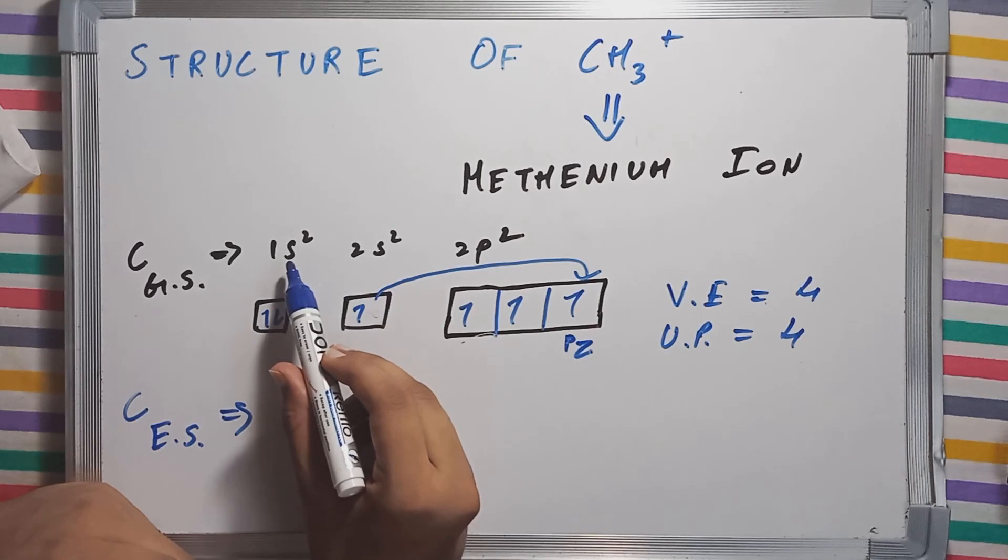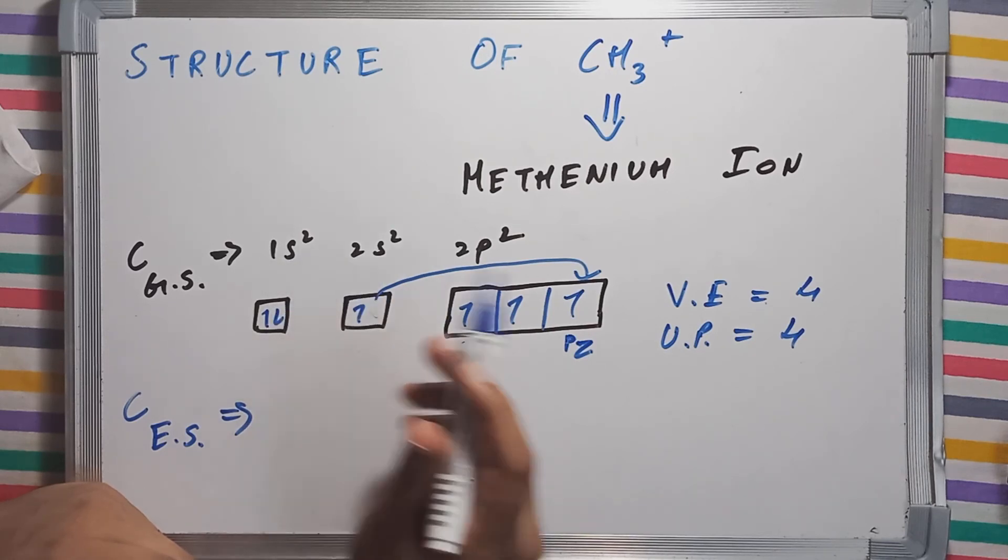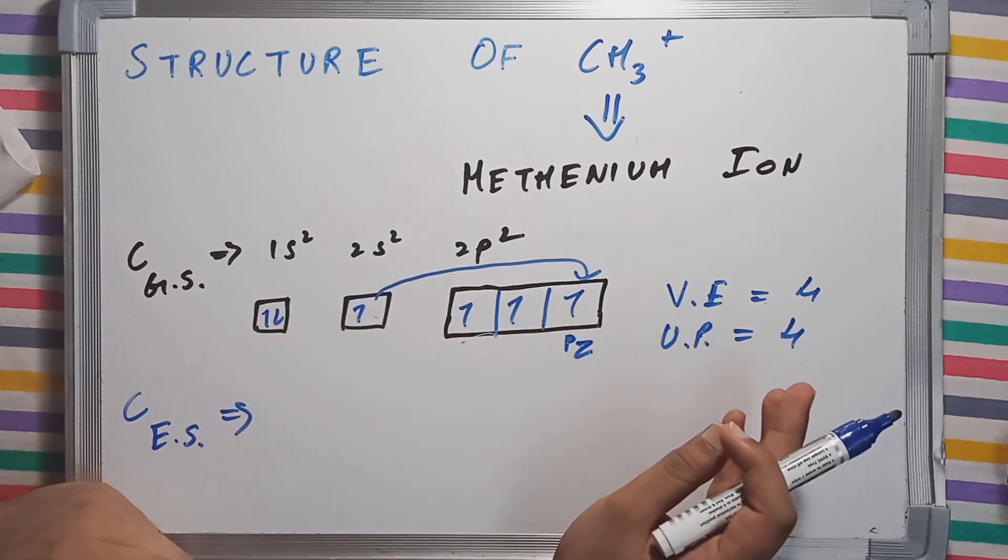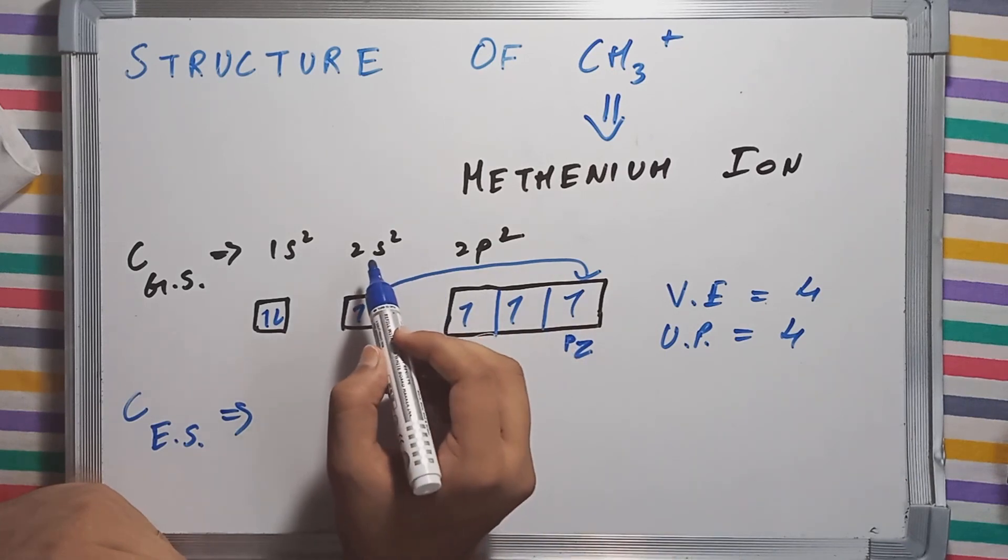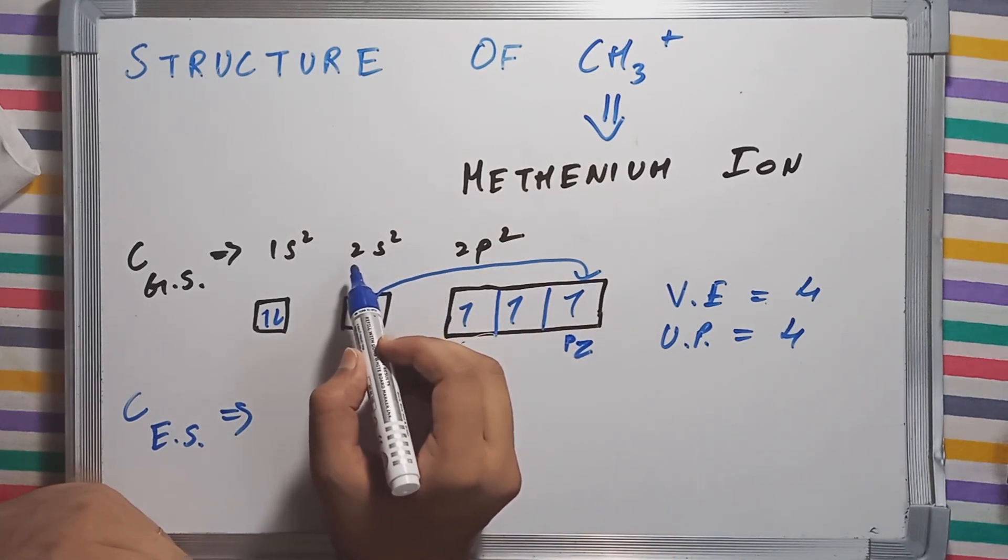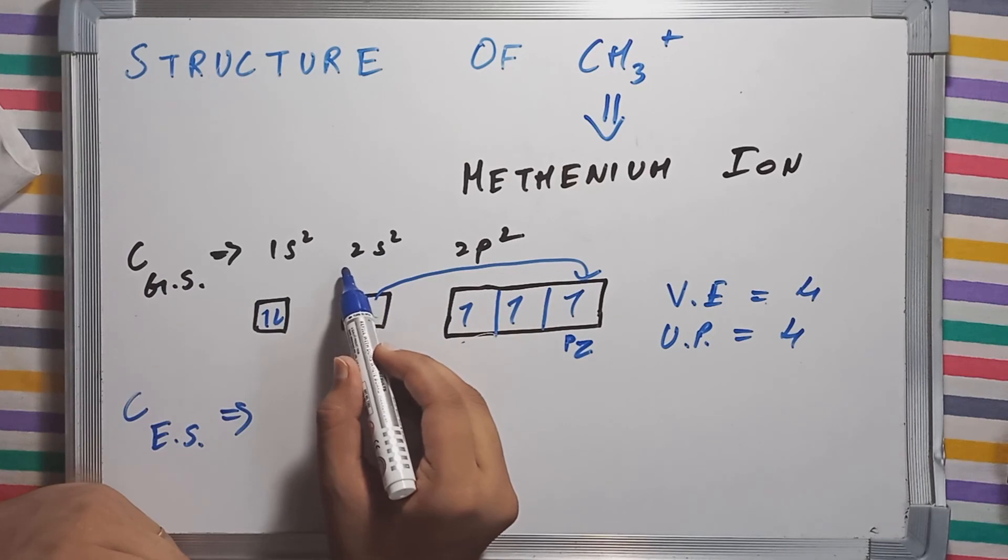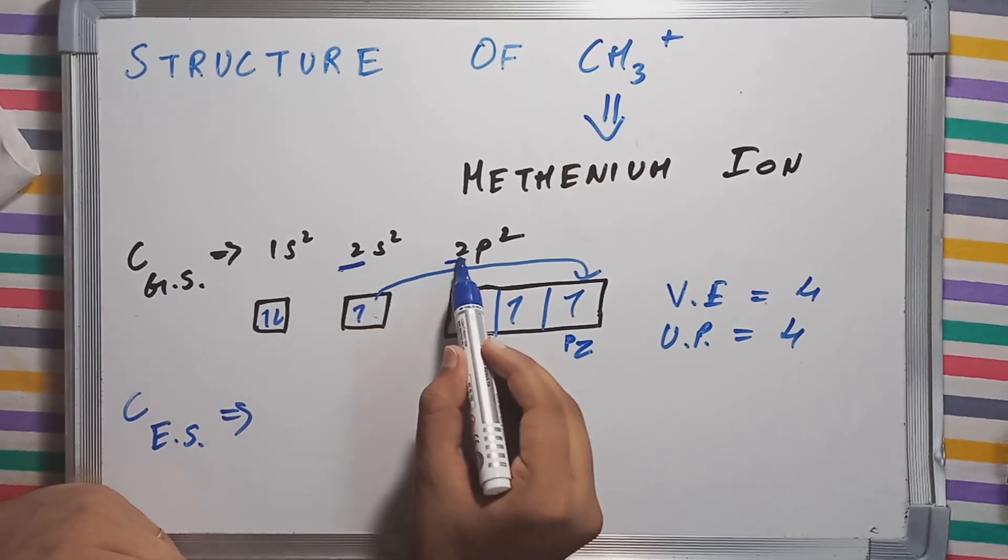Why didn't I count this one? Because when we try to calculate the number of valence electrons, we always look for the electrons which are present in the outermost shell. For carbon, the outermost shell is the second shell.